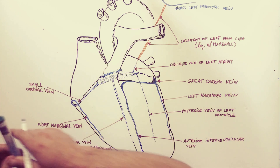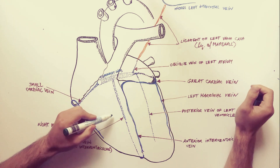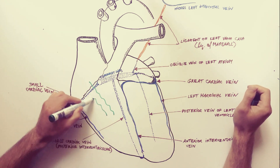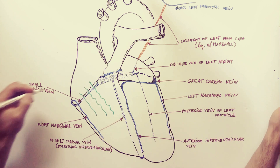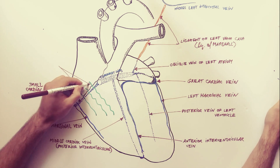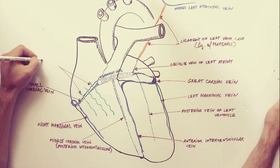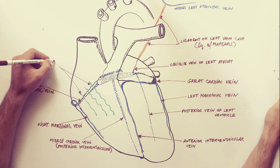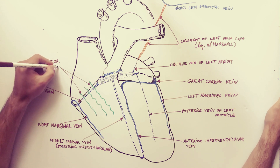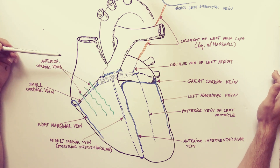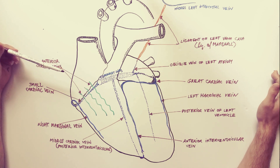The anterior cardiac veins are several small vessels from the front of the right ventricle; they cross the coronary sulcus to empty directly into the right atrium. Also notable are the least cardiac veins, or Thebesian veins — small vessels arising within the musculature of the heart and draining directly into the cavities of the heart.